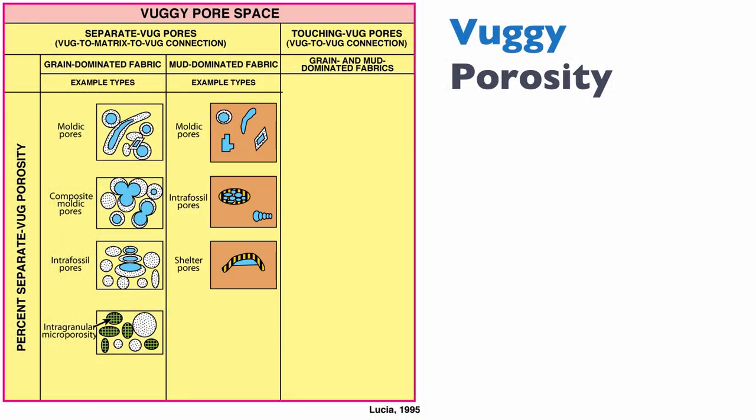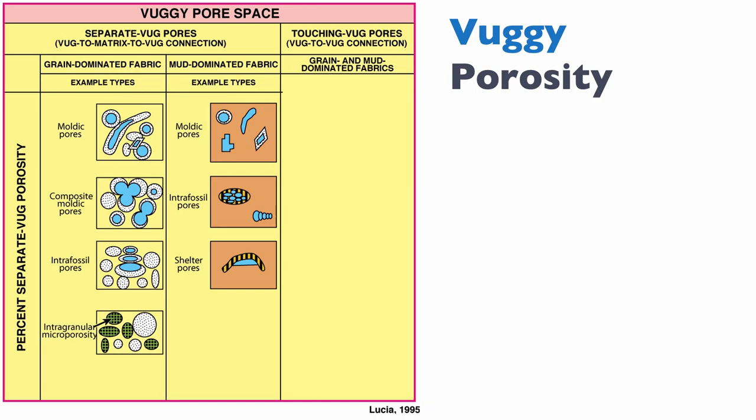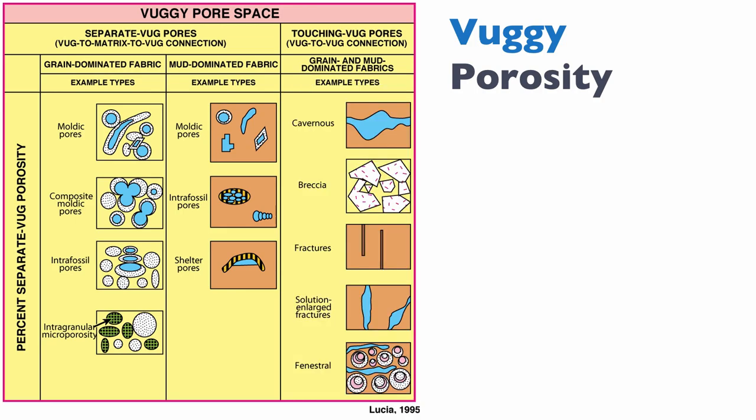For mud-dominated fabric, examples would again be moldic pores, intra-fossil pores, and shelter pores. Because the fabric is muddy, these pores contribute even less to overall permeability. Touching vugs, on the other hand, can be cavernous vugs, breccia, fractures, solution-enlarged fractures, or fenestral porosity. Because they are touching, they contribute significantly to permeability.